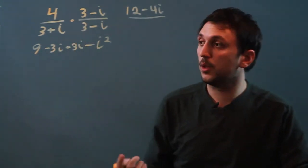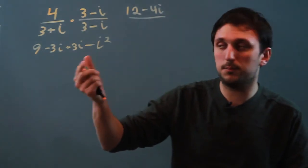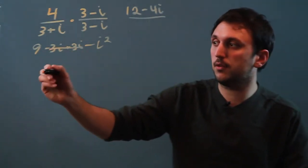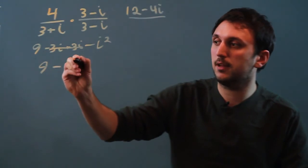So now we have this long equation we can simplify. Minus 3i plus 3i, that cancels out. So now we have 9 minus i squared.